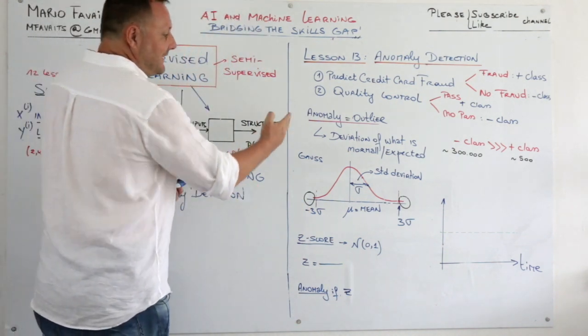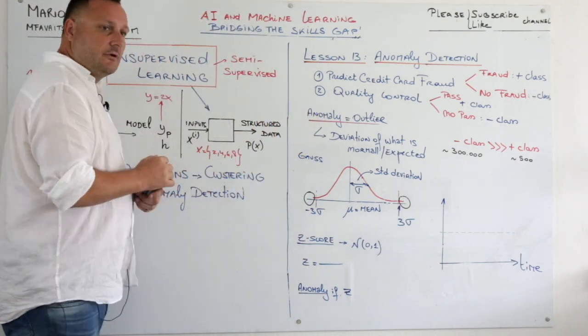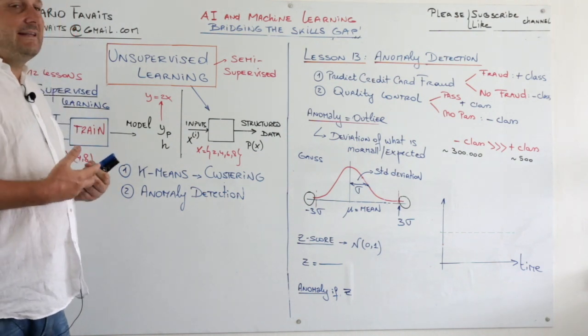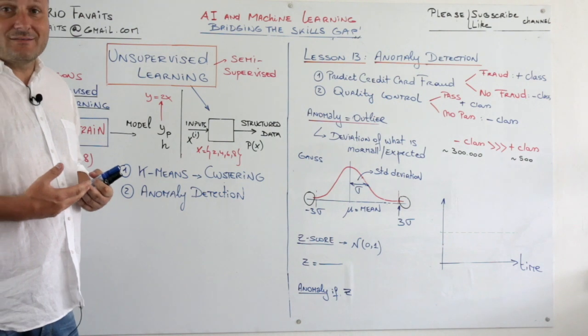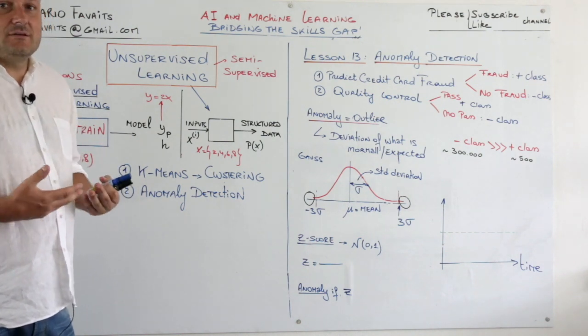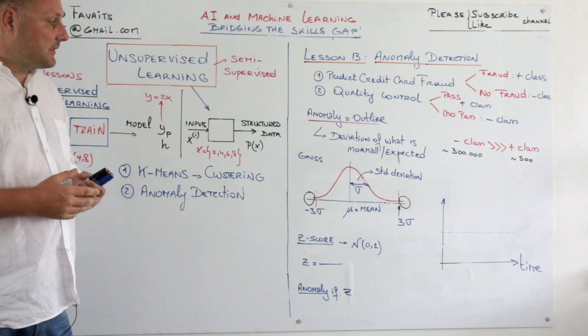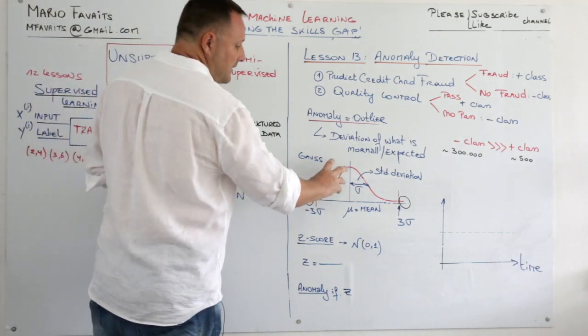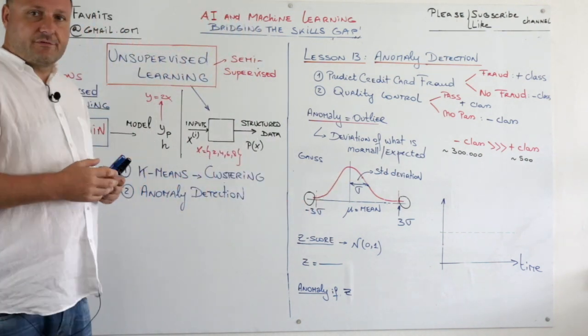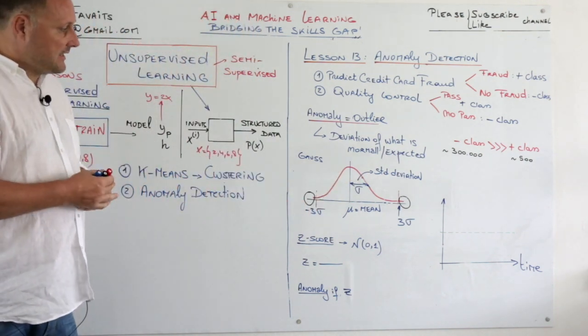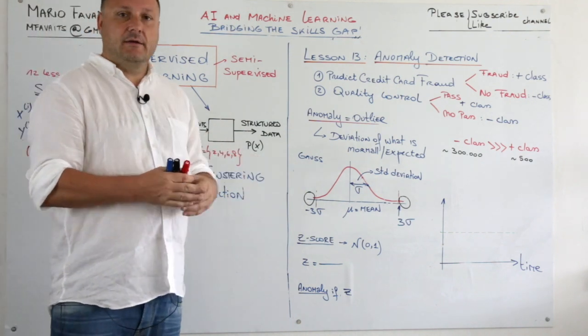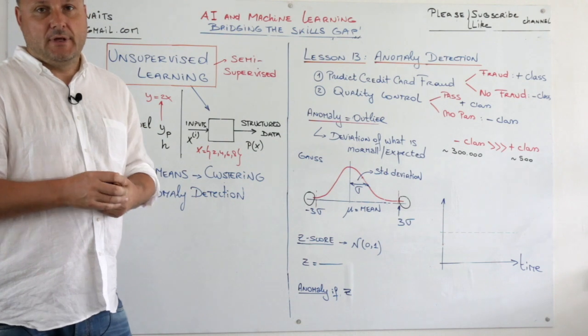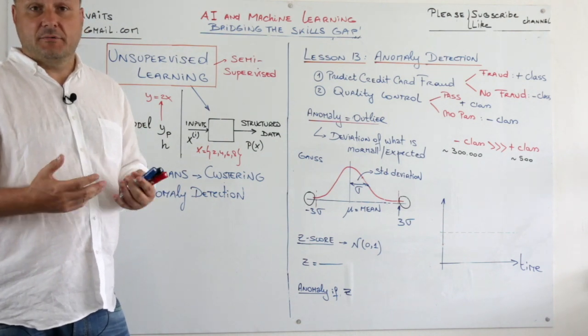You just don't have enough fraud cases to train your model. All right, so an anomaly, another word for an anomaly is an outlier. And basically how do we define it? Well, it deviates from what you expect as being normal. So that is the broad definition of an anomaly or an outlier. And I try to show this now using a Gauss curve here.